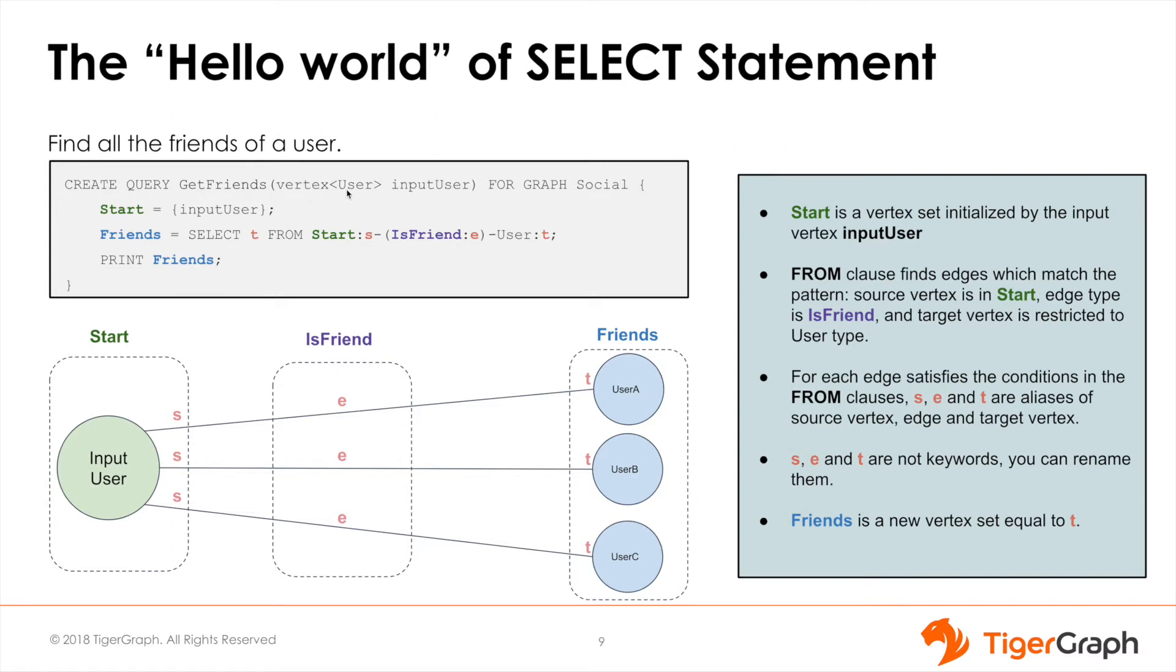Moving down we can see Start. Start is a vertex set containing the vertices that we passed through while calling the query. The vertex set may contain an arbitrary number of vertices, but in our specific case we will only be passing in one vertex.